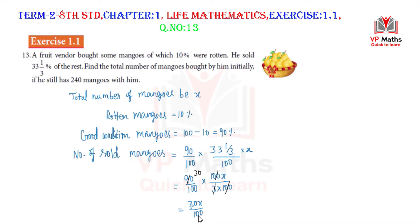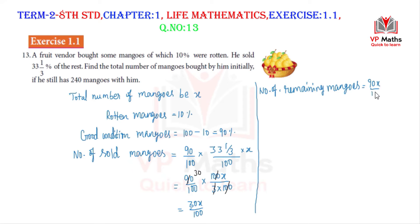The number of sold mangoes is 30x/100. Remaining mangoes equals 90x/100 minus 30x/100, which gives 60x/100. The food condition (given) is that 240 mangoes remain.